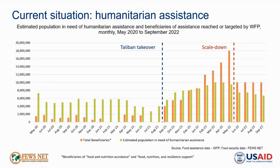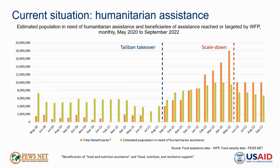Looking at humanitarian assistance trends, emergency food assistance programming was significantly scaled up following the Taliban takeover. WFP targeted a high of 18 million people in May 2022, more than 11 times the number reached in May of the prior two years. WFP is now scaling down to target 10 million people in the post-harvest period from June to September, but this level is still more than five times the number reached in prior years, and is expected to play a significant role in preventing worse food security outcomes across the country.